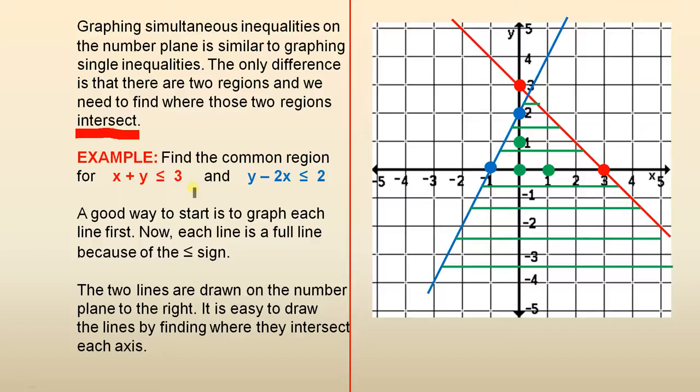Example: find the common region for x plus y is less than or equal to 3 and y minus 2x is less than or equal to 2.